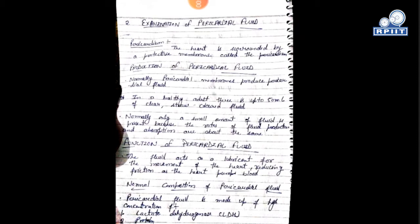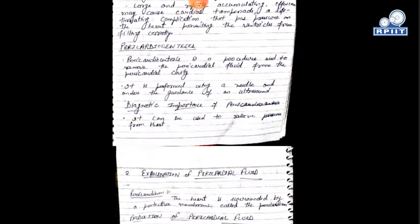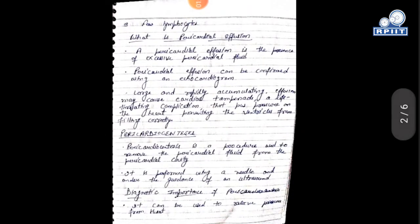What is the normal composition of pericardial fluid? It is made up of high concentration of LDH — lactate dehydrogenase — protein, and a few lymphocytes.